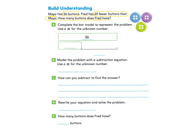Here we have the total number of buttons that Maya has, which is 36, and we know that Fred has 20 fewer buttons than Maya. So we are going to write 20 here because he has 20 fewer, or 20 less, and our unknown is the amount of buttons that Fred has.